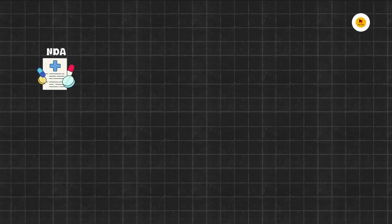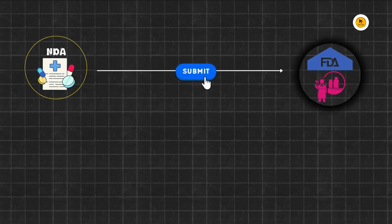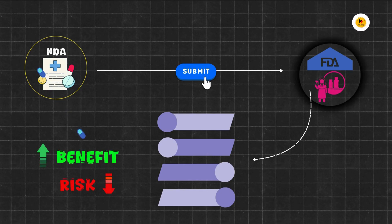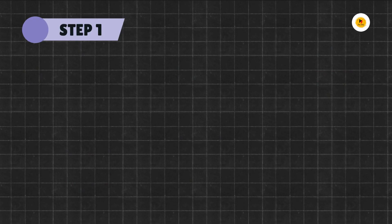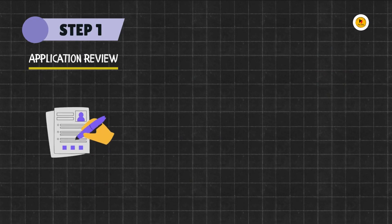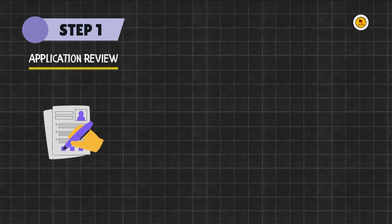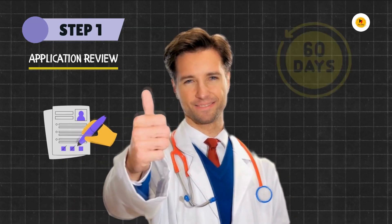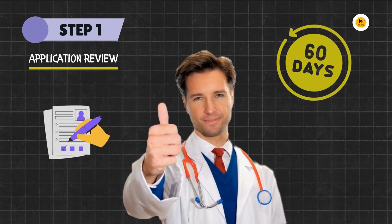Once the NDA is complete, it's time for submission. The FDA follows a rigorous multi-step review process to determine if the benefits of the drug outweigh any potential risks. The first step is Application Review, where the FDA reviews the application to make sure all required information is present. This step alone can take up to 60 days.